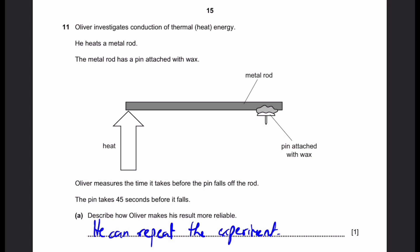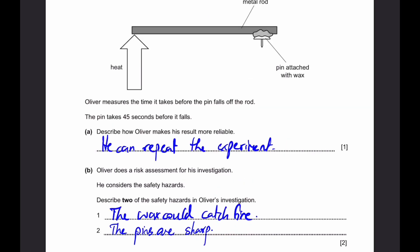Question 11. Oliver investigates conduction of thermal energy. He heats a metal rod. It has a pin attached with wax. Oliver measures the time it takes before the pin falls off the rod. The pin takes 45 seconds before it falls. Part A: Describe how Oliver makes his result more reliable. The most simple answer is he can repeat the experiment. Because then, if he has a few more trials, he can take the average and simply avoid anomalous results. That's how you make it more reliable.